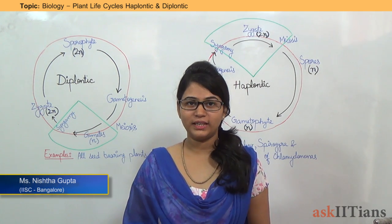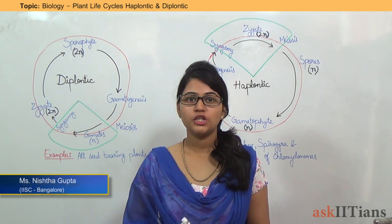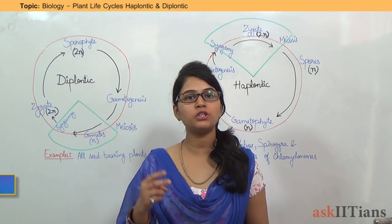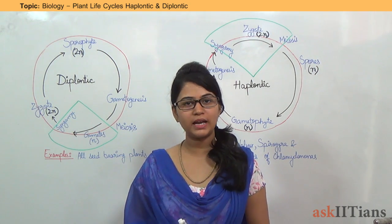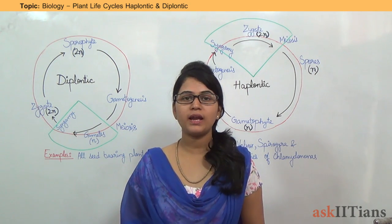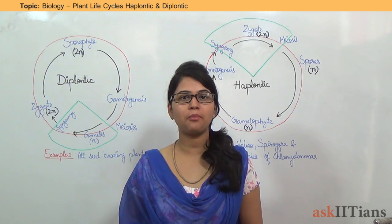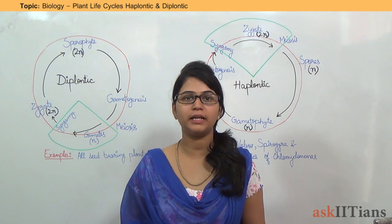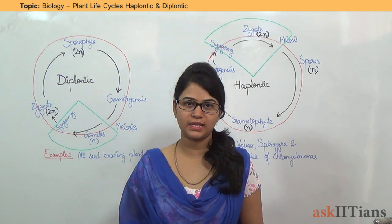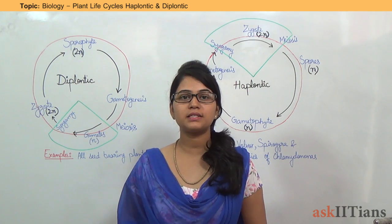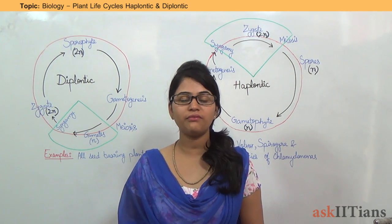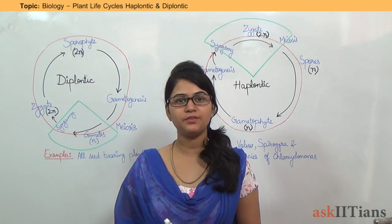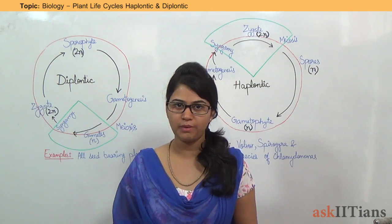Hello students. Today we are going to discuss two types of plant life cycles. The first one is the haploid life cycle and the second one is the diploid life cycle of plants. So let's start with the first part, that is the haploid life cycle of plants.